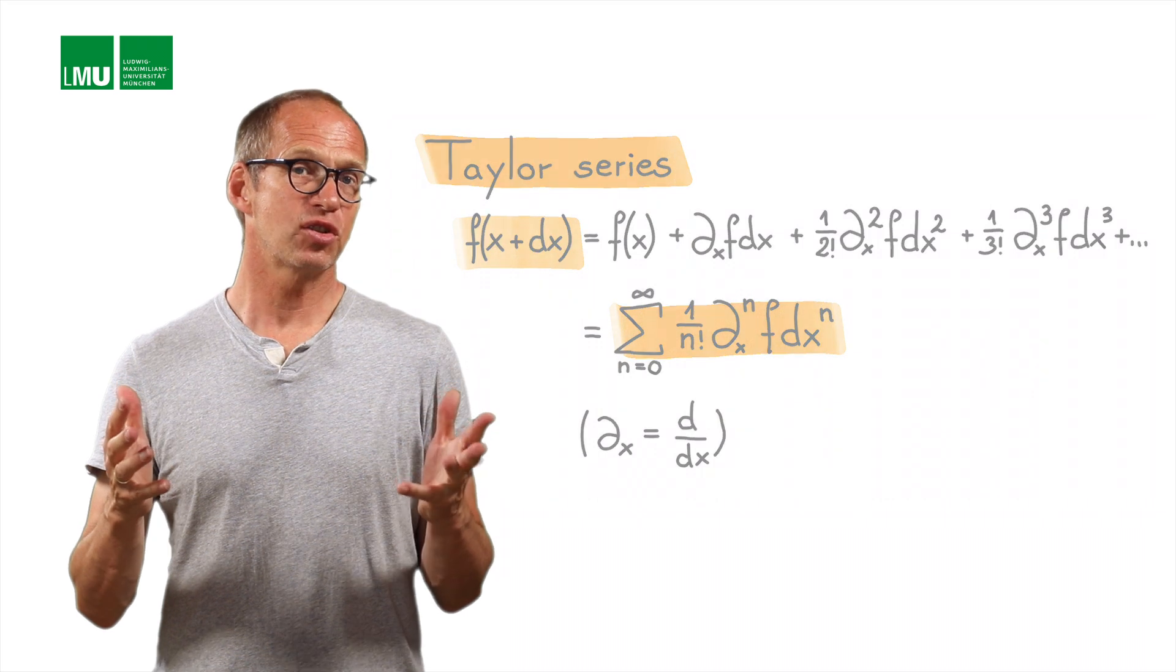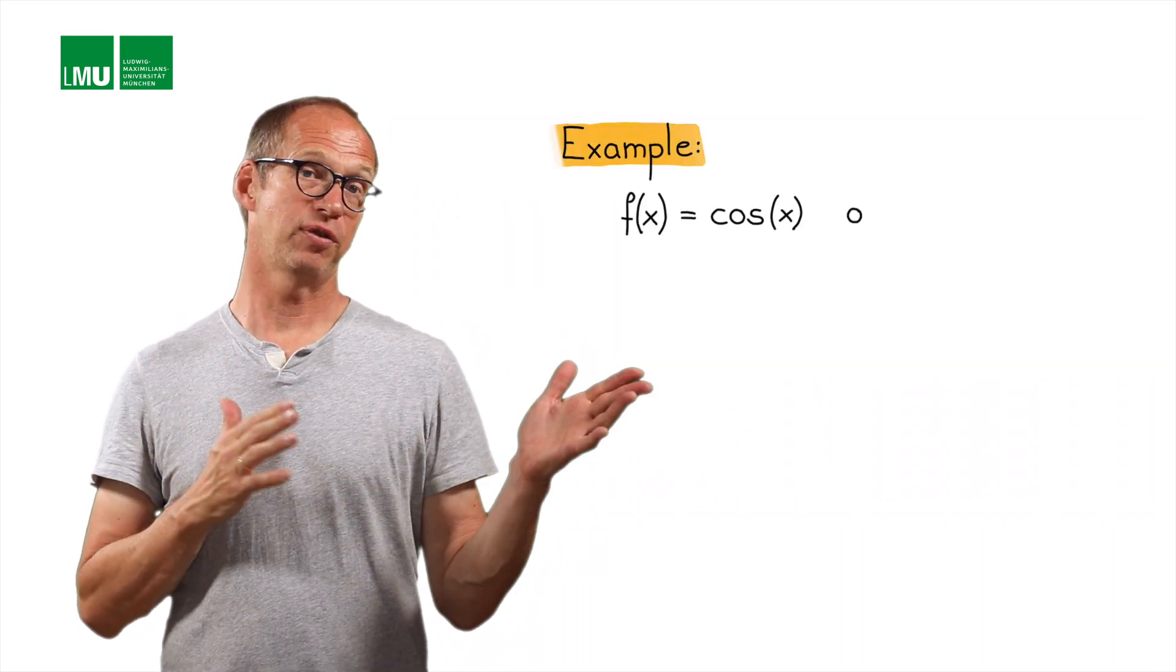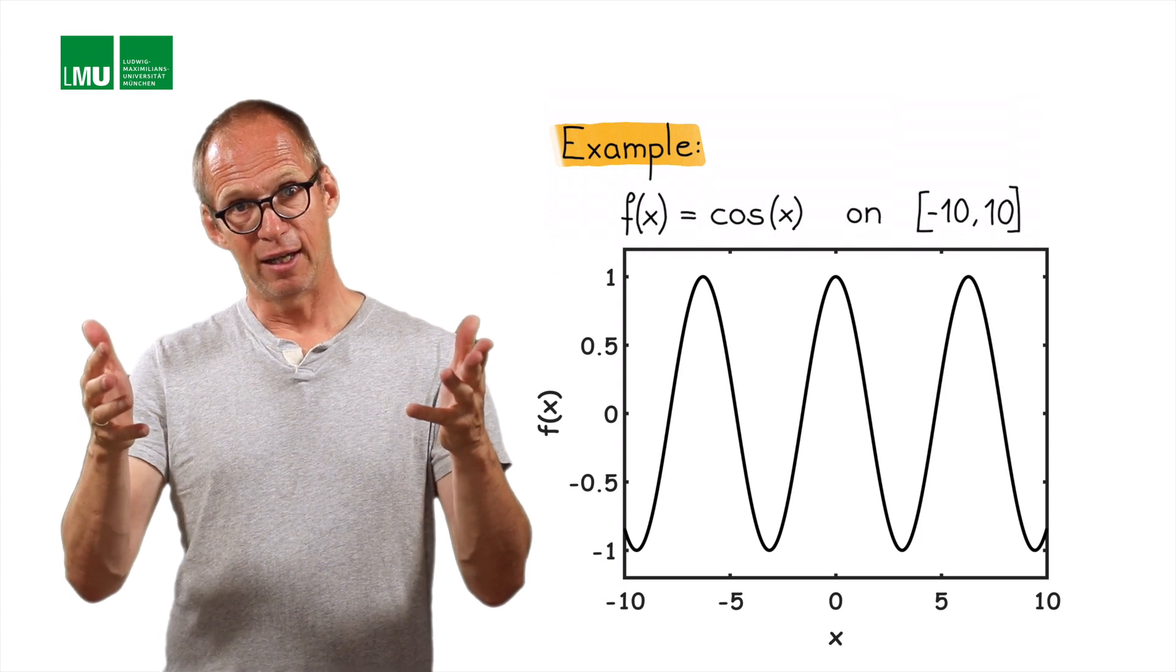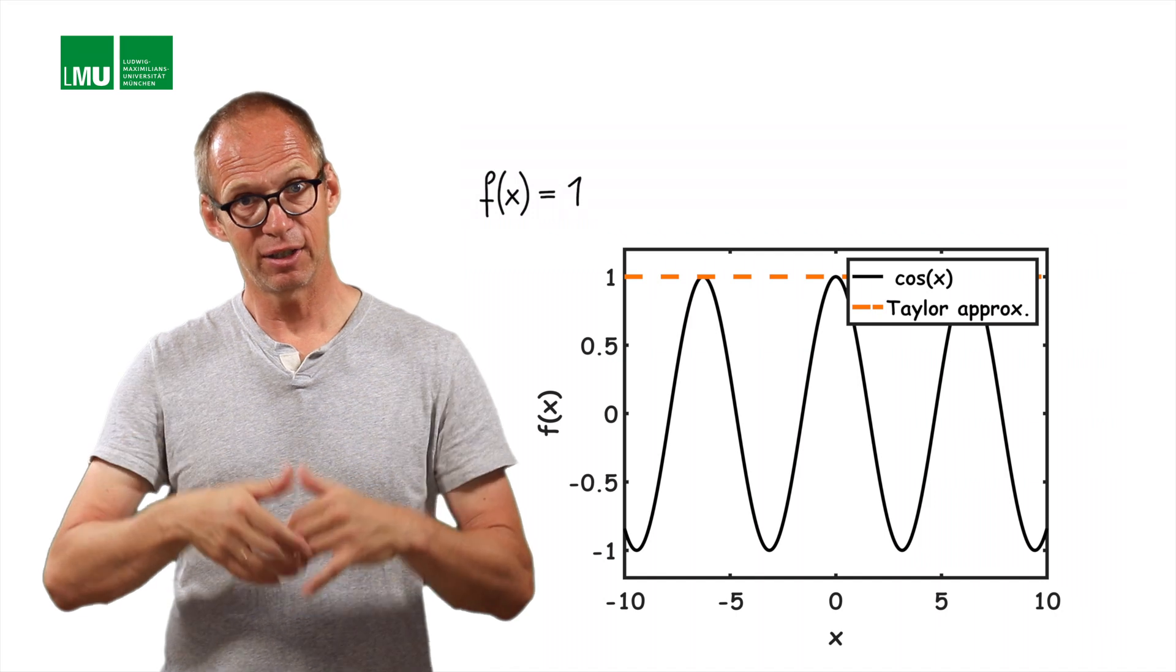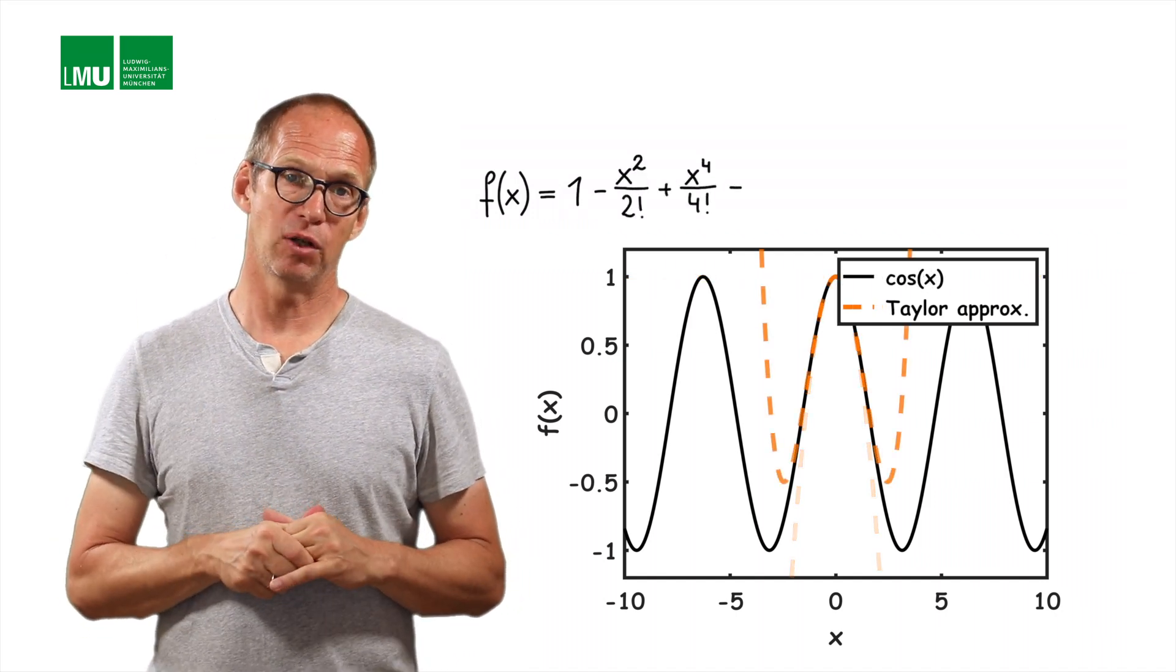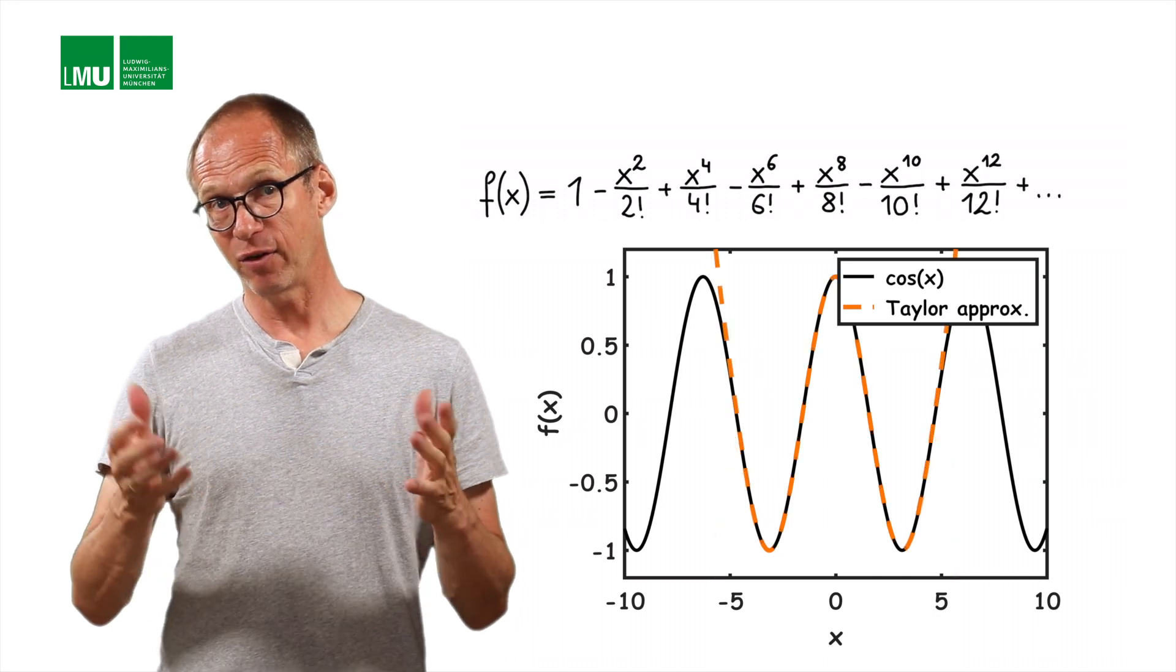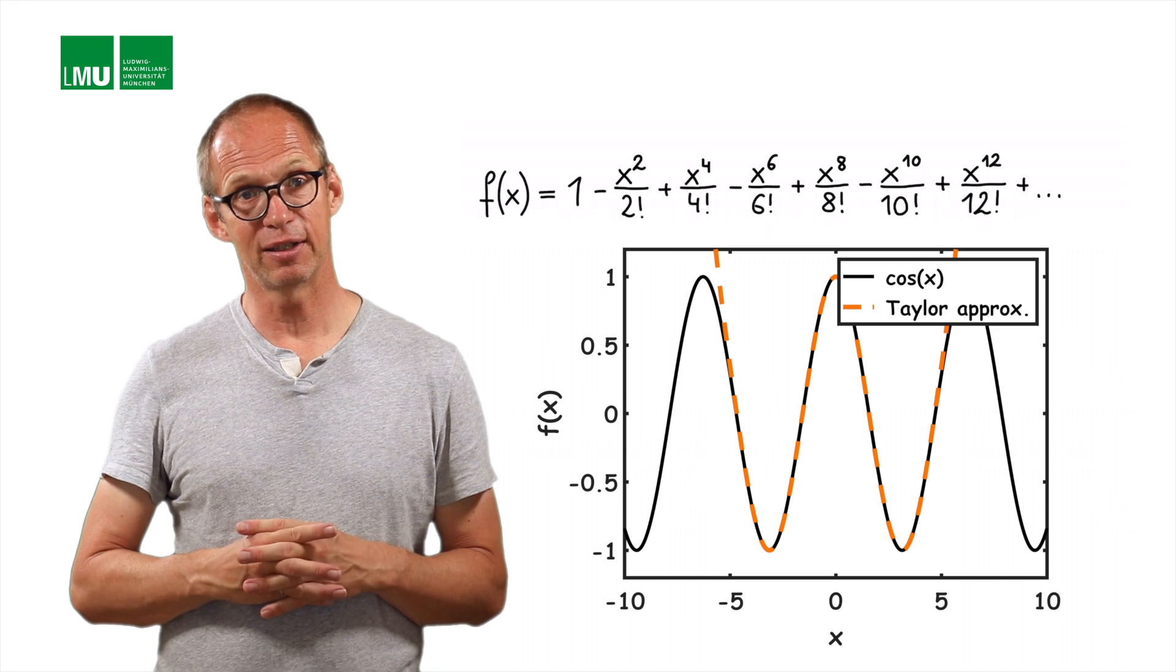Now I would like to start with an example approximating the cosine function defined between minus 10 and 10. Here you see an example of the function itself first, and then we show the approximation, the Taylor series for that function, with increasing order terms. We see that the approximation gets better and better the more terms we add. That's a very powerful method that's used almost everywhere in natural sciences.